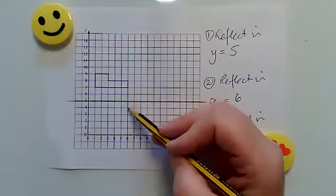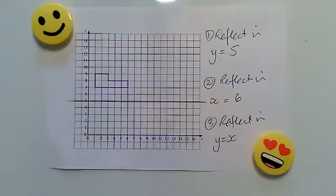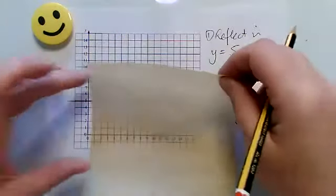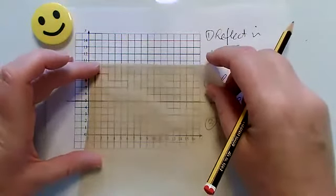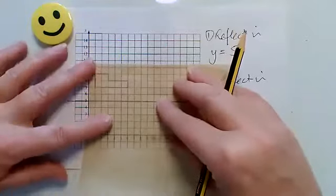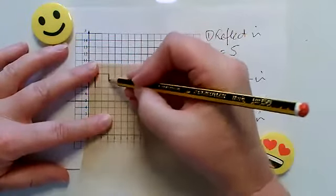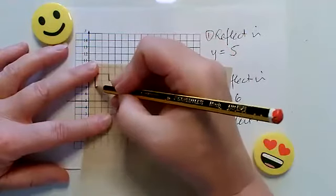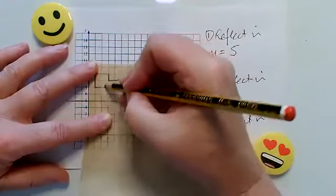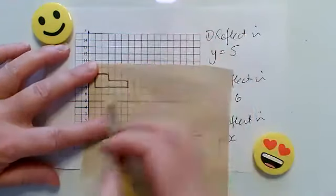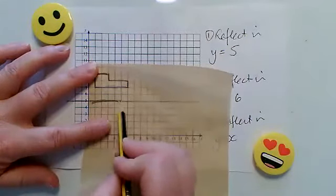We can do a counting method, that's absolutely fine, but I'll just show you how to use this tracing paper. So if I trace over my shape roughly like that, and I also just want to show where the mirror line is.